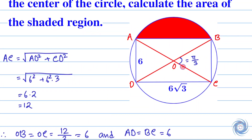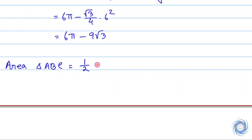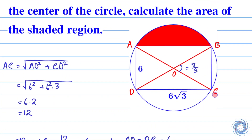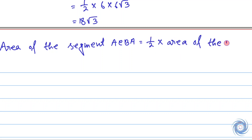Since ABCD is a rectangle, the area of triangle ABC is half the area of rectangle ABCD. The area of triangle ABC is 18 root 3. Since AC is the diameter, the semicircular area ACBA equals 18π.